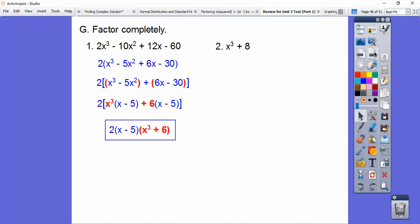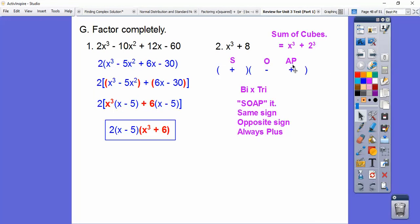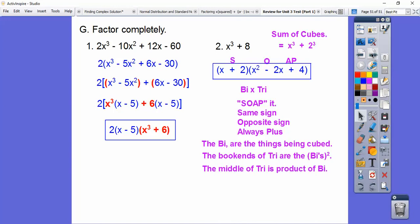One more, and then we'll stop after this. So this is a sum of cubes. A sum of cubes goes a binomial times a trinomial, and then we soap it. Same sign, opposite sign, always positive, S-O-A-P, soap. So same sign as this, and this is the opposite sign, so this one's a minus. This one's always plus. And then what goes in the bi are the things that are being cubed, the x and the 2. And then in the tri, these bookends, I like to call them, this side is this one squared, so x². This side is this one squared, so 2 squared is 4. And then in the middle, we just multiply. x times 2 is 2x. So there's our groovy answer.